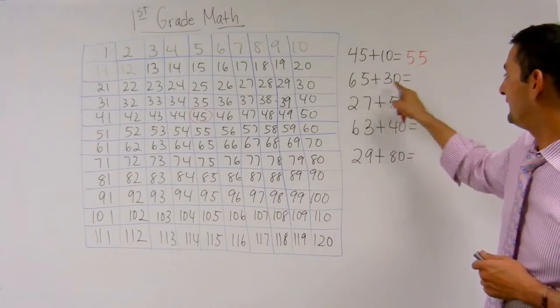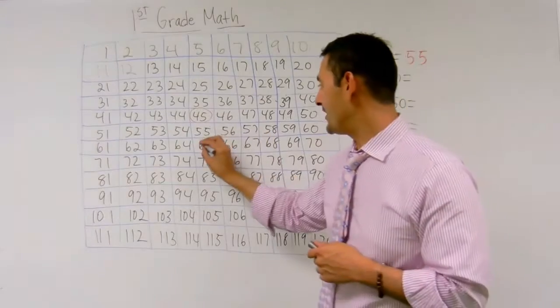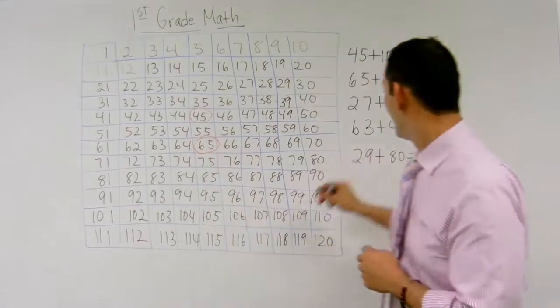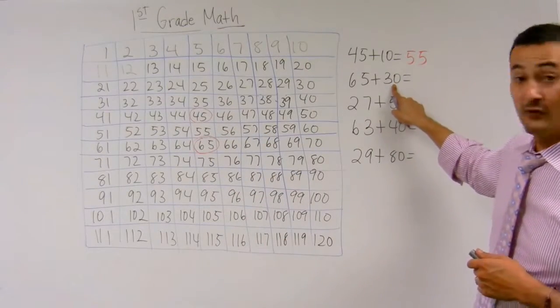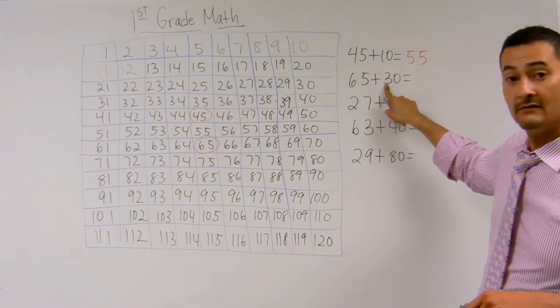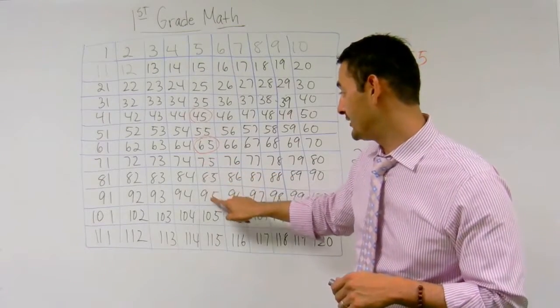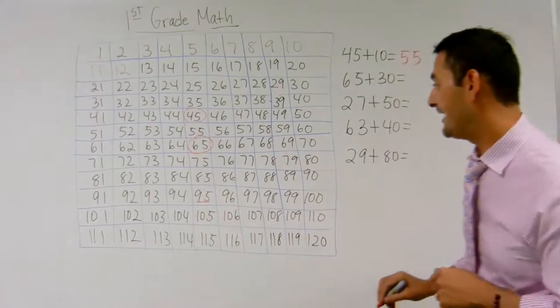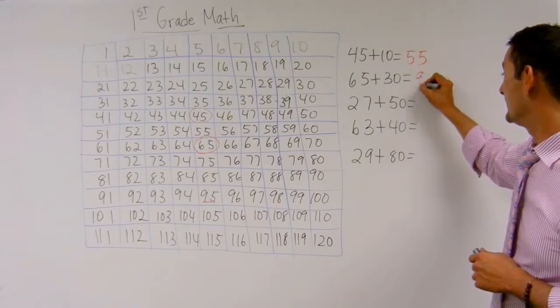Now let's go ahead and do 65 plus 30. So here we are at 65, we're going to add 30, that means we're going to go down how many? Three, right? So we're going to go 10, 20, 30. 65 plus 30 equals 95.